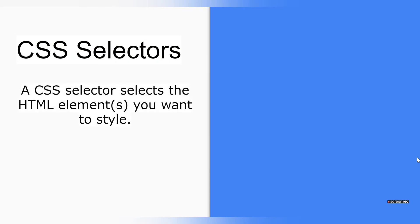Hello friends, welcome to CodeCrush Coding. In this video we are going to learn about CSS selectors. A CSS selector selects the HTML element you want to style — whatever element you want to style in your HTML document is called a selector, and to that particular selector you can apply the property and value of CSS.